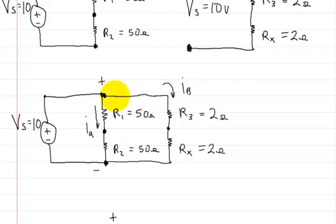If I put my voltmeter anywhere from here to here, anywhere on this line, I'll have 10 volts. The resistance values for these resistors did not change. Rx and R3 are still 2 ohms. R2 and R1 are still 50 ohms.